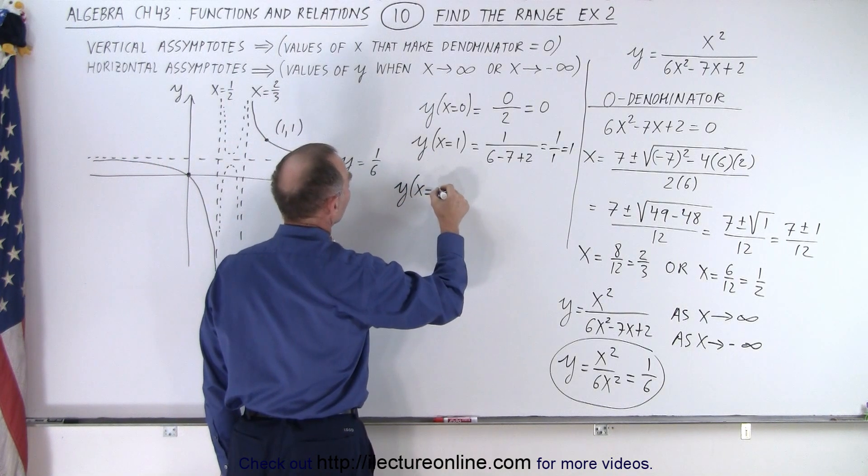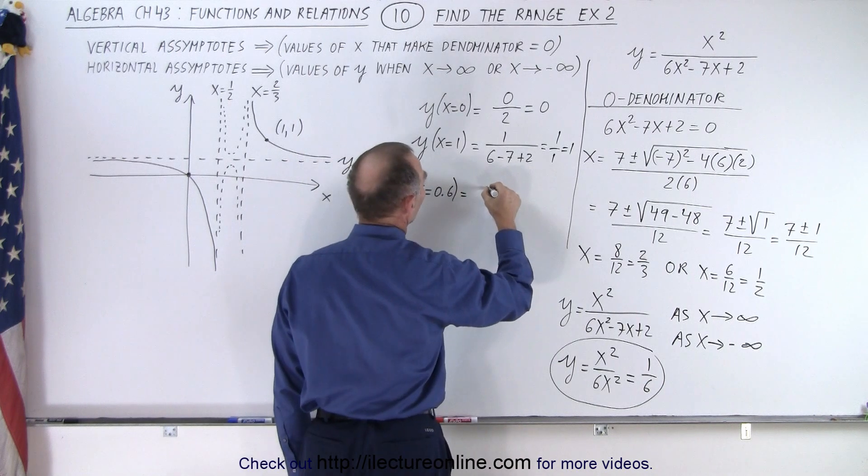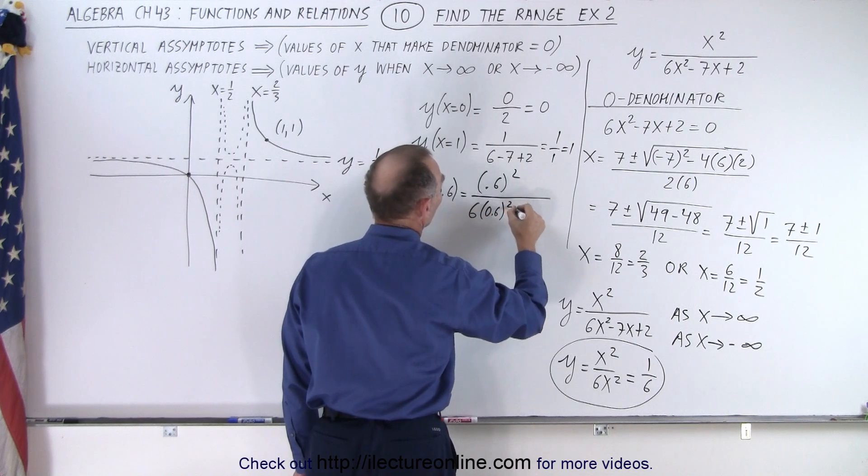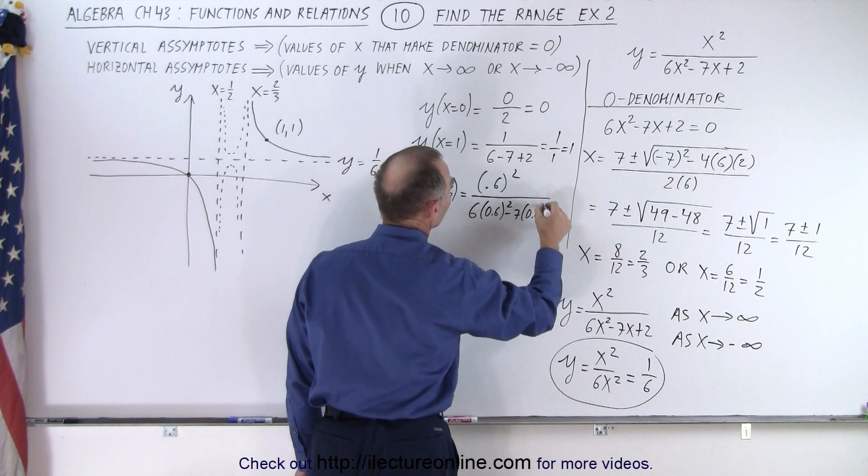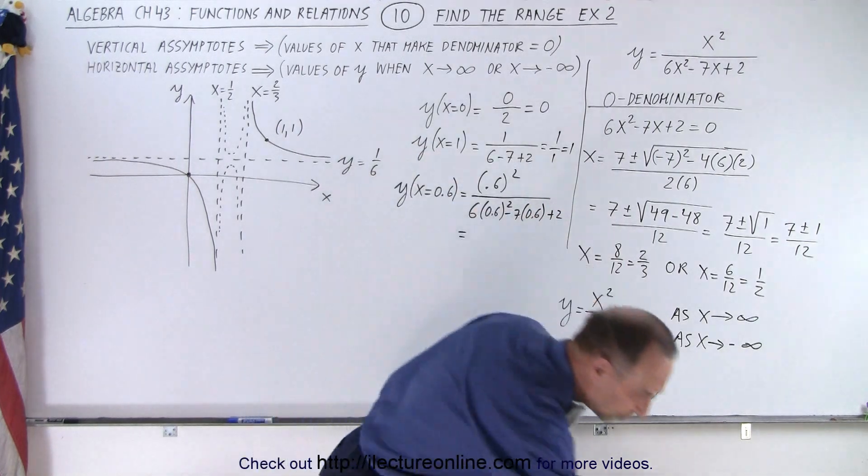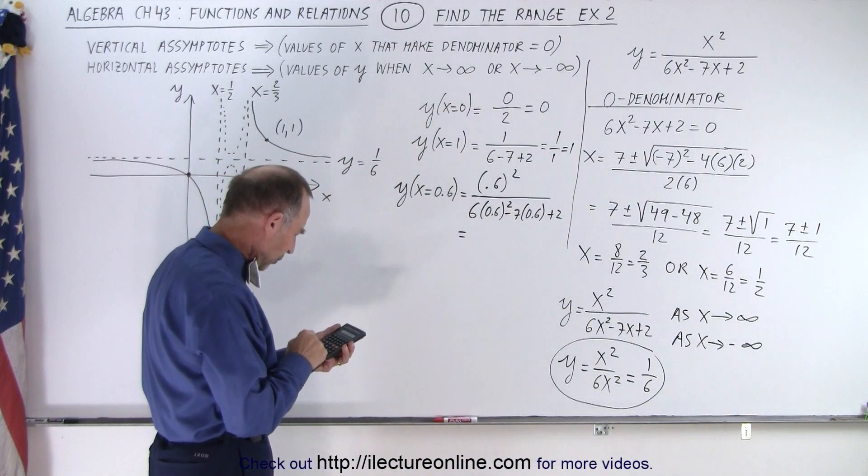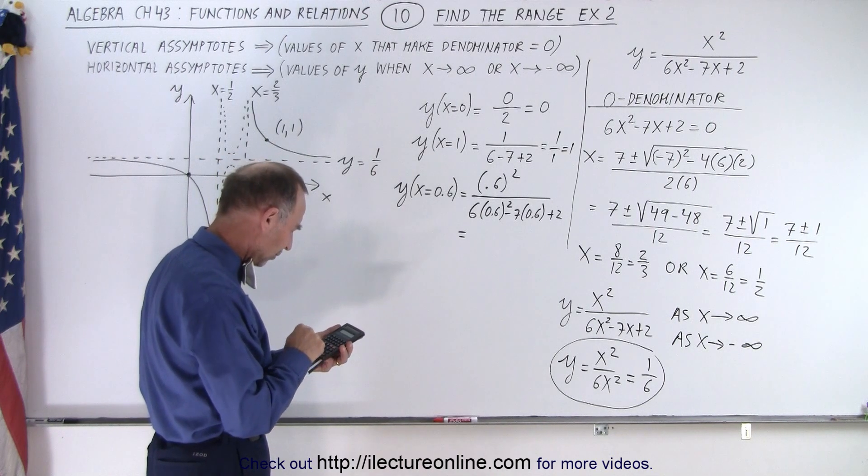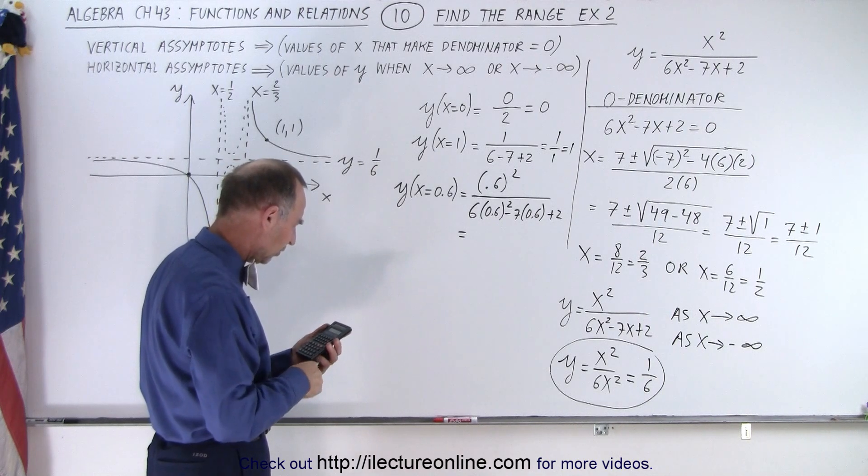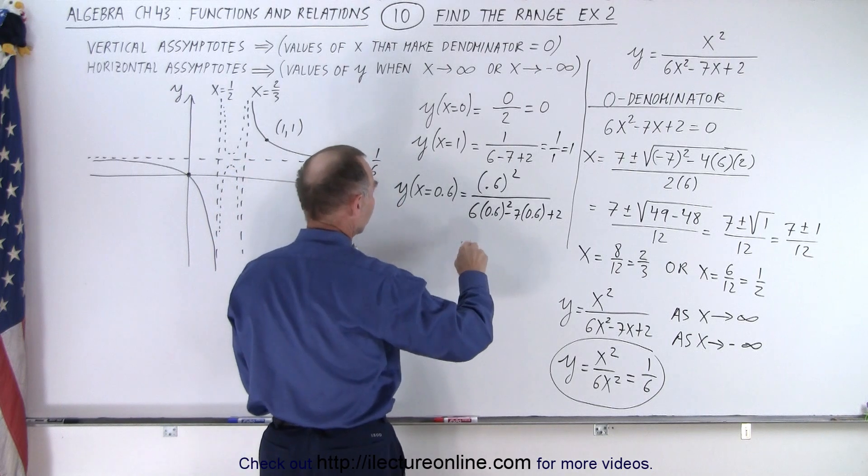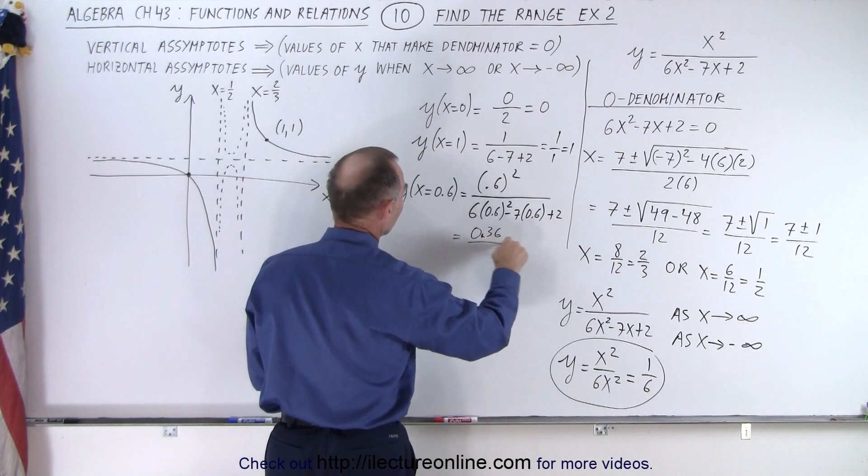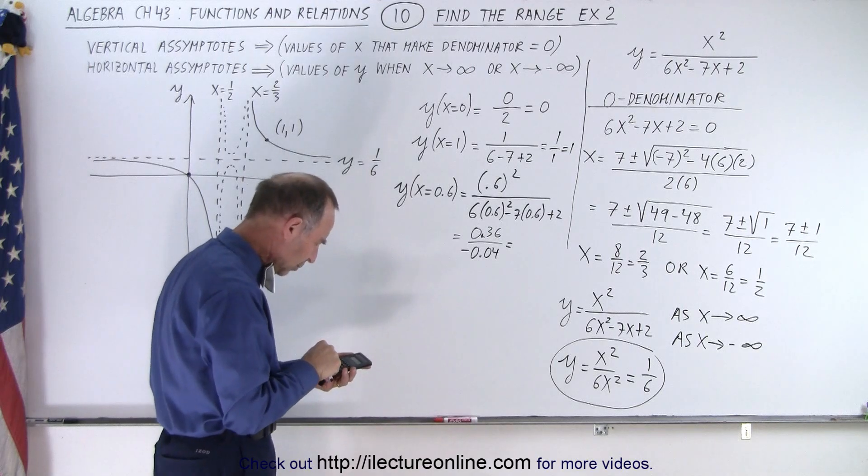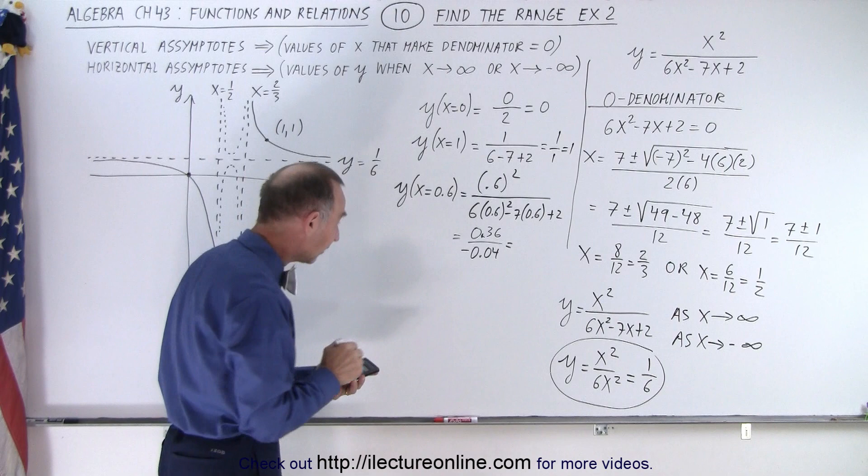So y when x equals 0.6 is equal to, in the numerator, we get 0.6 squared divided by 6 times 0.6 squared minus 7 times 0.6 and plus 2. So in the denominator, we get 0.6 squared times 6 minus 7 times 0.6 and plus 2. Let's just write down the result, the intermediate result. So in the numerator, we get 0.36, in the denominator, we get minus 0.04.